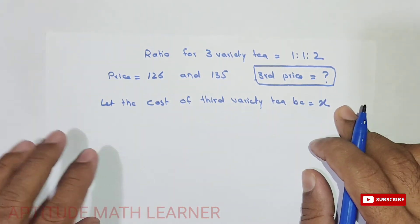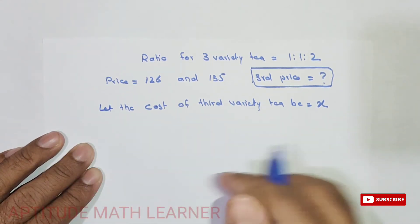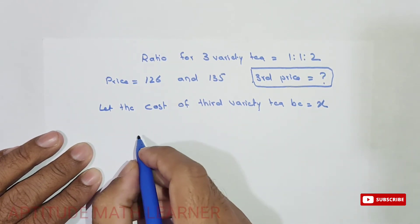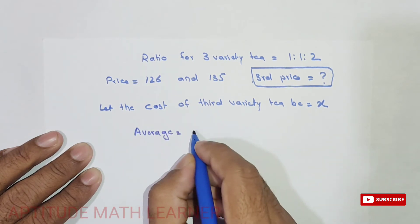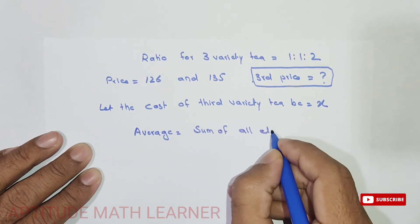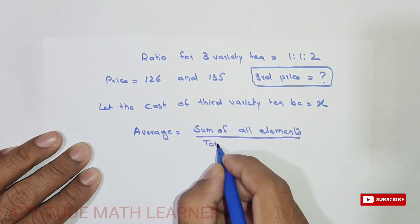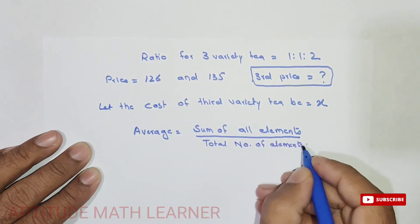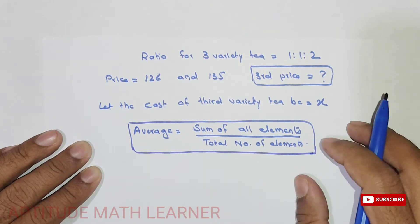Before starting, we use a very easy method. We have already learned the formula for average, which is: average equals the sum of all elements divided by the total number of elements. We will follow the same method to find the price of the third variety.